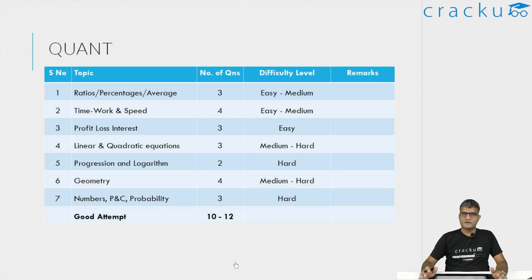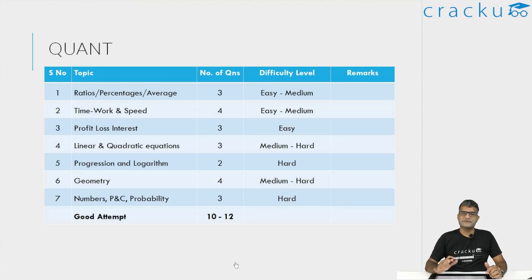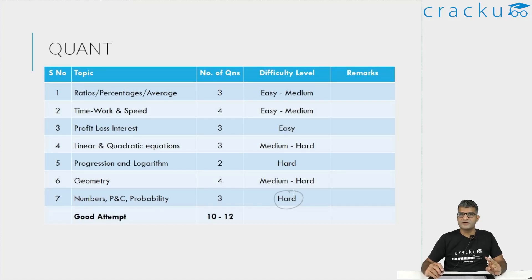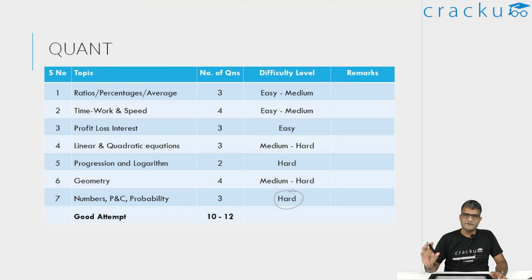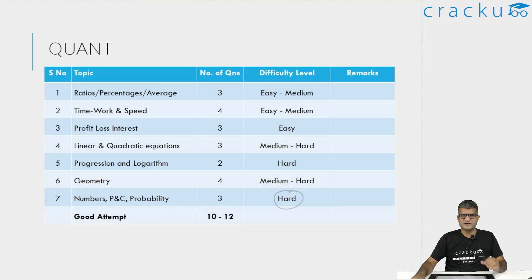Looking at the quant section, it was overall a hard section — not an easy section. Many questions were tricky, but still some were on the easier side, especially in topics typically considered difficult like probability and linear equations. Unfortunately, we had to categorize some as hard because most people did not attempt them. For example, there were two questions in probability and permutations-combinations; one was definitely on the easier side — a fairly straightforward foundational-level question involving probability greater than 1/3 — but very few people answered it because many freaked out by probability.